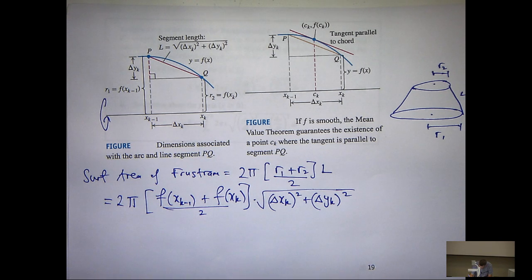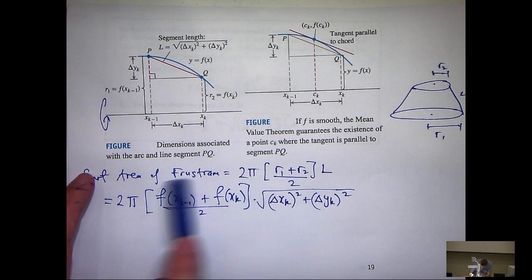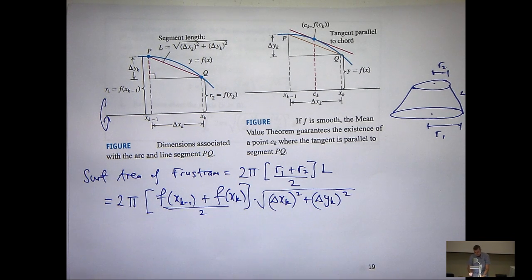Now, this gives us an approximation for the surface area of one part of our surface. What we do now is just sum up everything, right? Sum up all the little bits and then take the limit. Now, if we do that, then this will actually collapse down to 2f of x. So we'll cancel that with the 2 on the bottom.